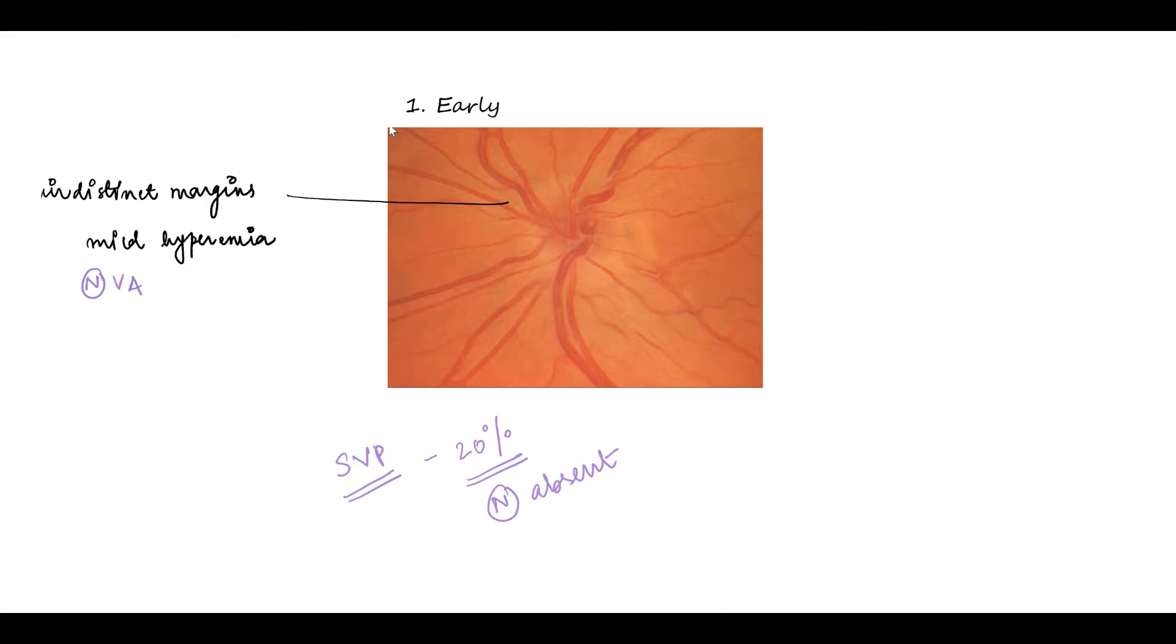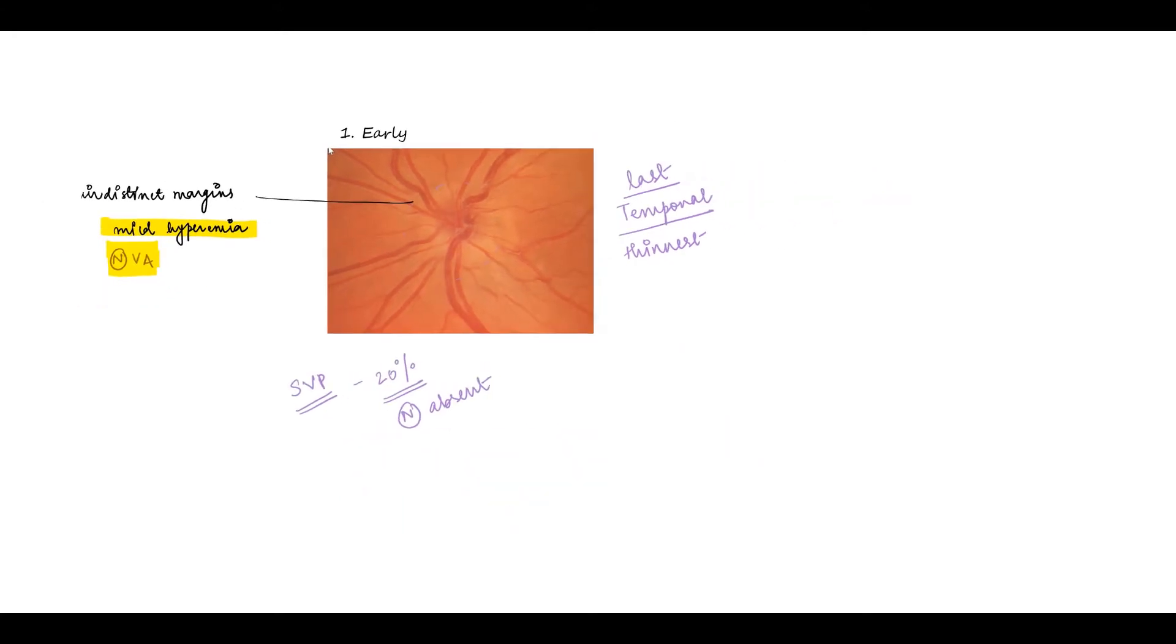In early papilledema, we can see indistinct disc margins. Remember that the last to be affected is the temporal part of the disc because the nerve fibers here are the thinnest. We can also see mild disc hyperemia because the surface capillaries on the disc dilate. Important to remember that the visual acuity here is normal and as these findings are minimal, this can go missed.